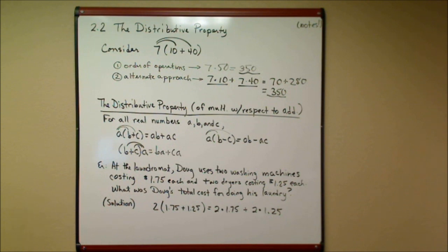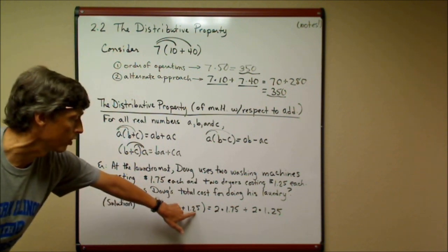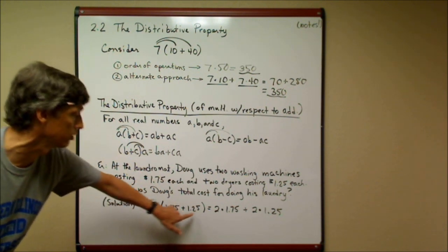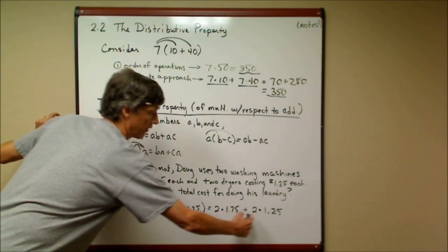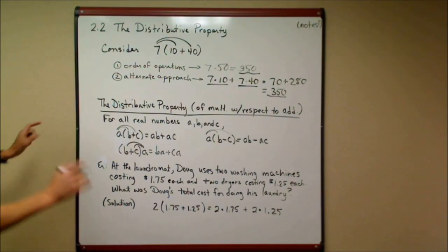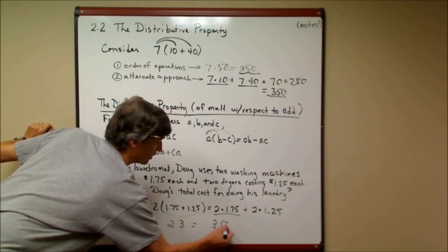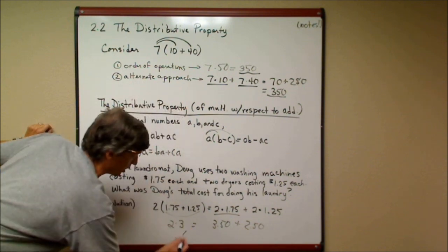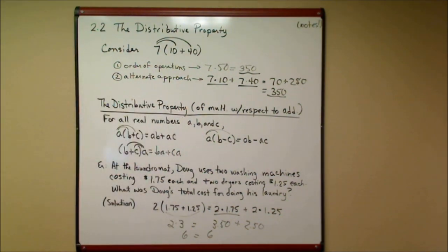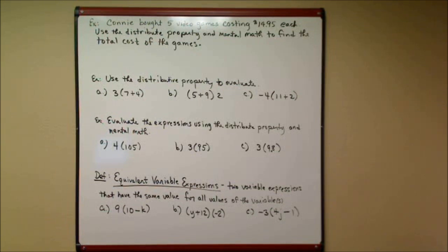First application: at a laundromat, Doug uses two washing machines costing $1.75 each and two dryers costing $1.25 each. What was Doug's total cost? I wrote this as two times the sum of $1.75 and $1.25. Adding those gives $3.00, so this is two times three — six dollars. Or distributing: two times $1.75 is $3.50, plus two times $1.25 is $2.50, which also gives six dollars. Either way, Doug's total cost is six dollars.